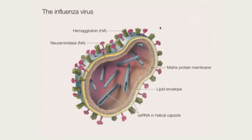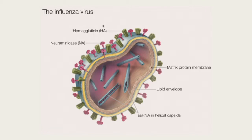Here we have the influenza virus. It has a lipid envelope stolen from the host cell. On the surface are neuraminidase and hemagglutinin. Hemagglutinin acts as a grappling hook that, when this floats by a host cell, it will glom on and spill the single-stranded RNA inside, making more infectious particles. This is the main target for the human immune response, and it's what the virus really needs to evolve.